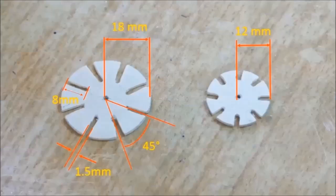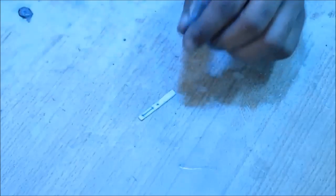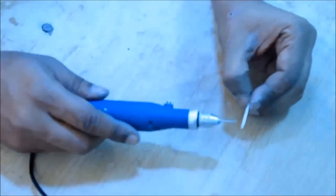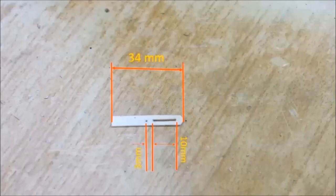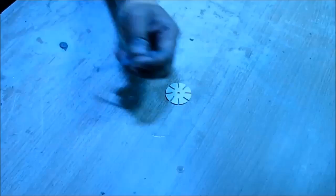The dimensions are given on the screen. Now we take a small plastic and draw a hole and a slot there. Cut it with a knife or a drill machine. You have to make such eight pieces.